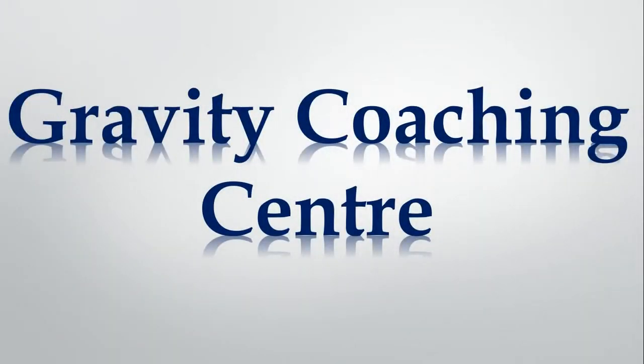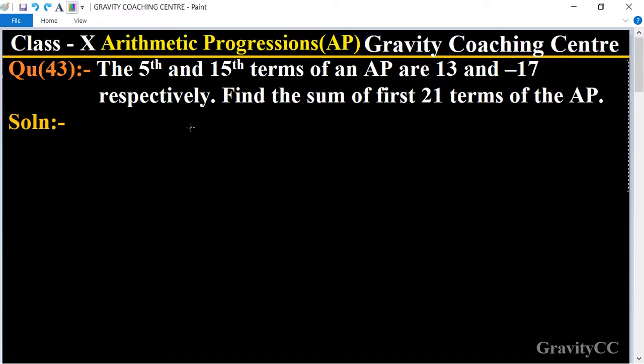Welcome to our channel Gravity Coaching Center, Class 10, Chapter Arithmetic Progressions, Question Number 43. The 5th and 15th terms of an AP are 13 and -17 respectively. Find the sum of first 21 terms of the AP.